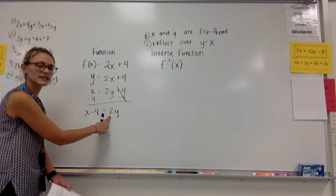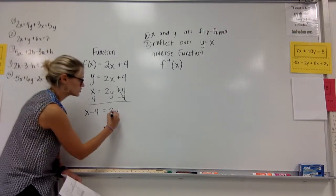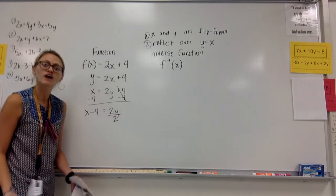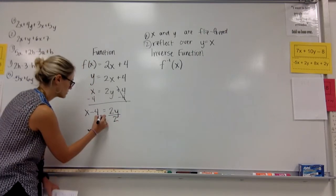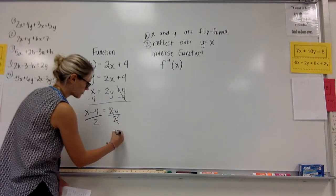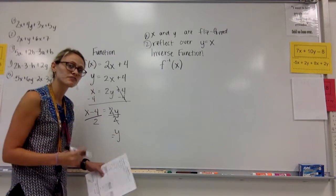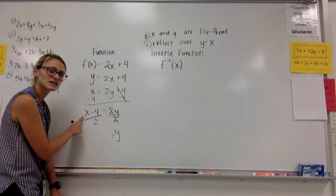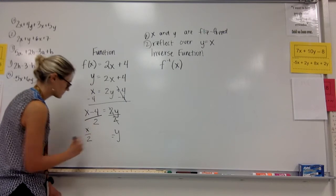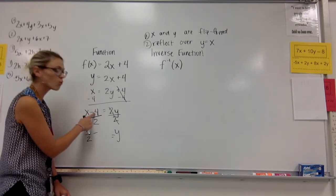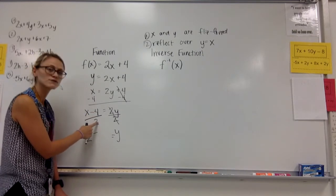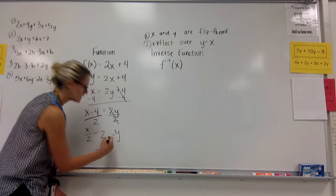I'm now left with x minus 4 equal to 2y. I'm almost done. I've got to get rid of this 2. 2 and the y are being multiplied, so I'm going to divide by 2 on each side. I've now got the y by itself. That's my goal. x over 2 minus 4 over 2. 4 over 2 is simply 2.